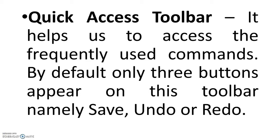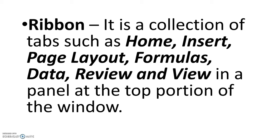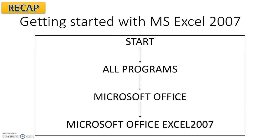The Quick Access Toolbar helps us access frequently used commands. By default, only three buttons appear on this toolbar: Save, Undo, and Redo. The Save shortcut key is Ctrl+S. The Undo shortcut key is Ctrl+Z. The Redo shortcut key is Ctrl+Y. The Ribbon is a collection of tabs — Home, Insert, Page Layout, Formulas, Data, Review, and View — in a panel at the top portion of the window. The Ribbon is a user interface element that helps us find commands quickly to complete tasks.